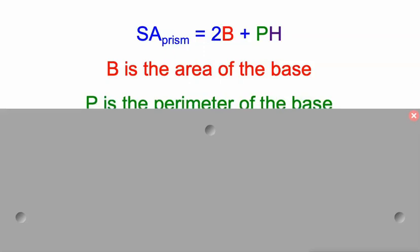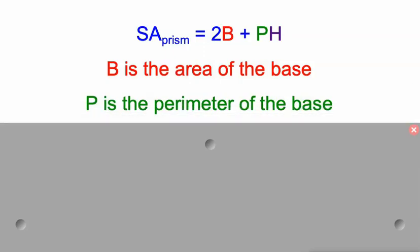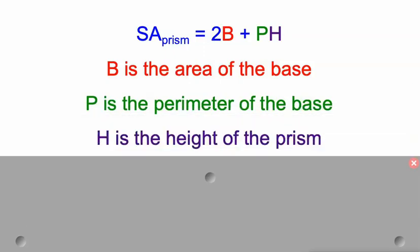And then this P times H we call the lateral surface area. It's the perimeter of the base times the height of the prism. When we add those two things together, we'll get the surface area.